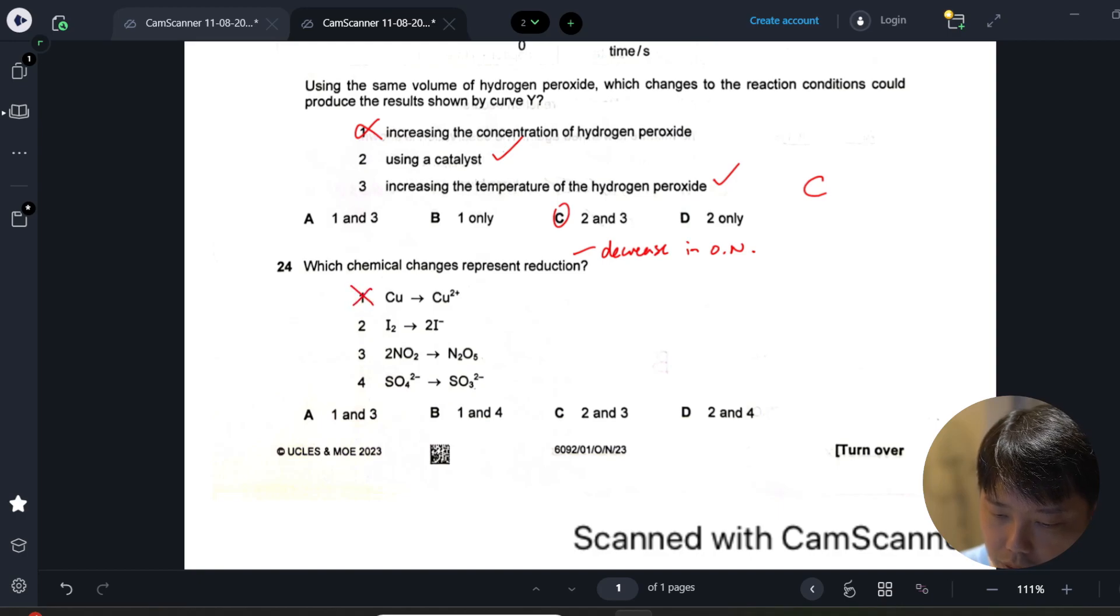Two is okay, it's a reduction because from zero to minus one is reduction. Two is okay. Three, right, there's an increase in number of oxygen so it is oxidation, so it's also not reduction.